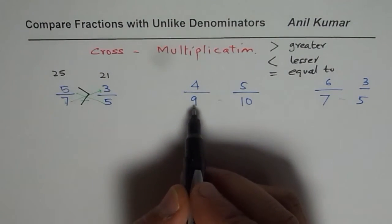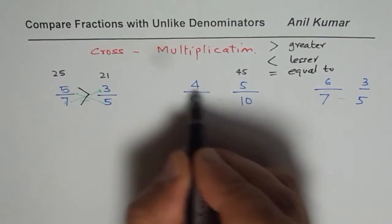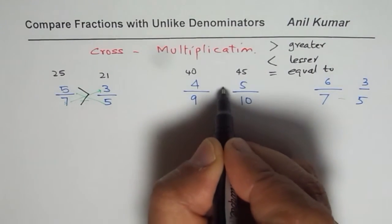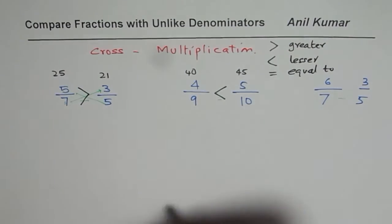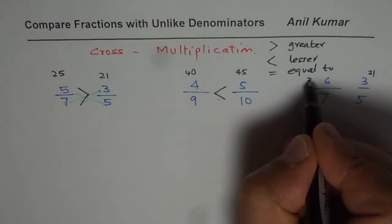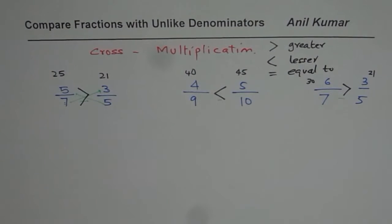Let's do it once again. 9 times 5 is 45. 10 times 4 is 40. Now 40 is less than 45, so I'll write less than here. 7 times 3 is 21. 5 times 6 is 30. Clearly, 30 is greater than 21. So I get my answer. You got it. So that is how we are going to compare.